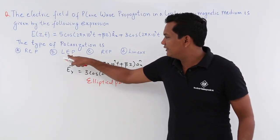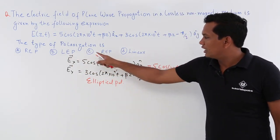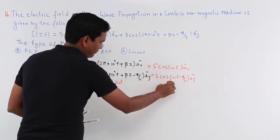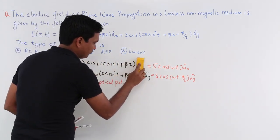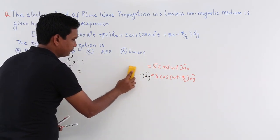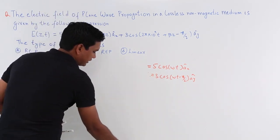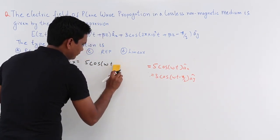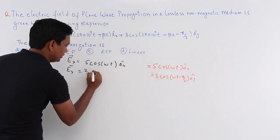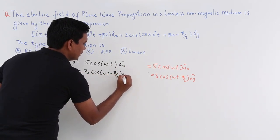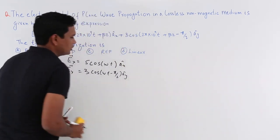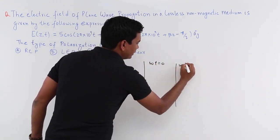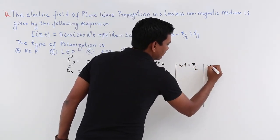Which elliptical polarization will it be — left elliptical or right elliptical? To determine this, I am going to plot the components. It is an elliptical polarization. Let me write the components again: 5 cos(ωt) Ax cap and 3 cos(ωt − π/2) Ay cap. I am going to substitute values for ωt = 0, ωt = π/2, and ωt = π.